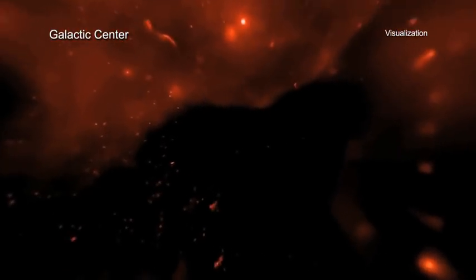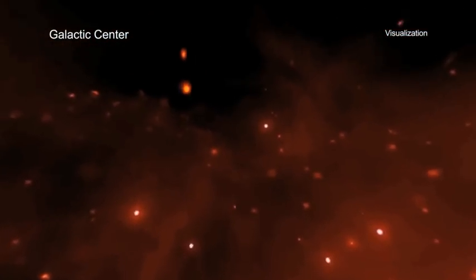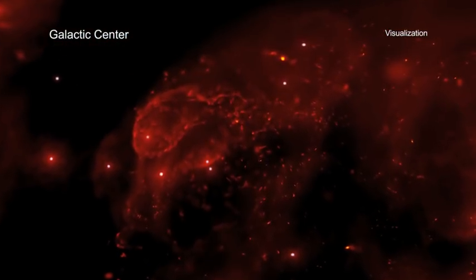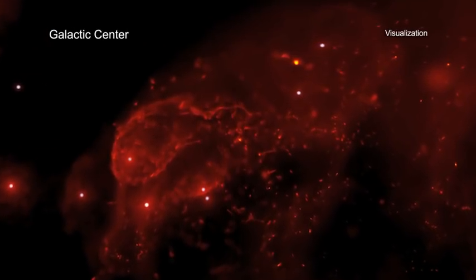This visualization builds on infrared data from the European Southern Observatory's Very Large Telescope of 30 massive stellar giants called Wolf-Rayet stars that orbit within 1.5 light-years of the center of our galaxy.